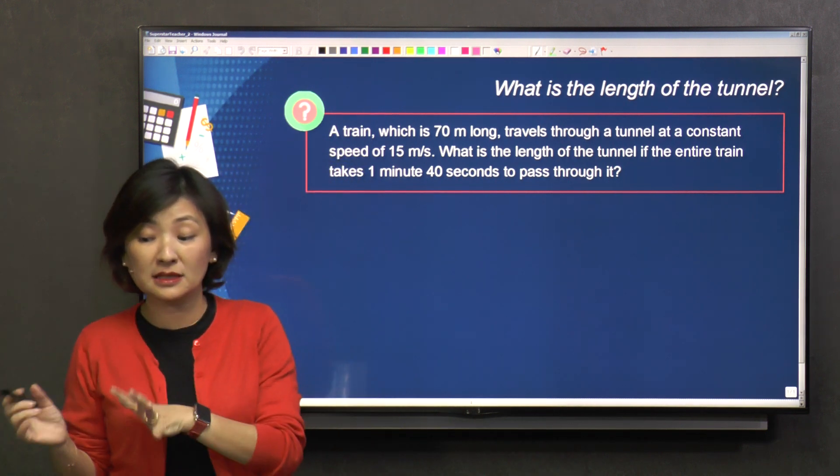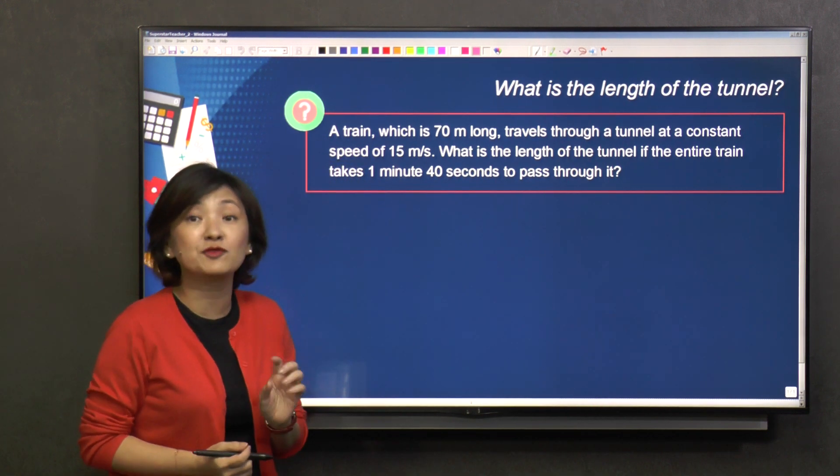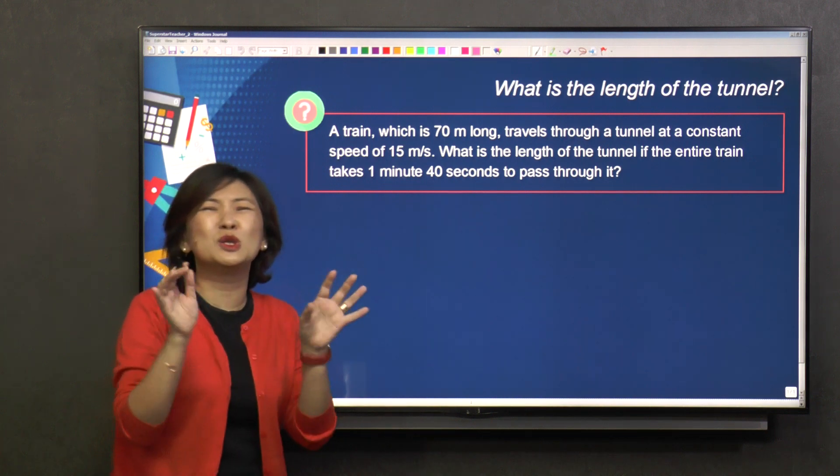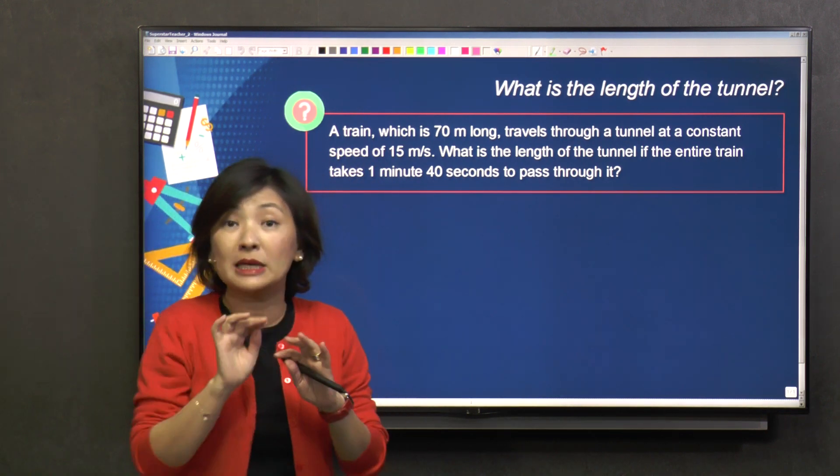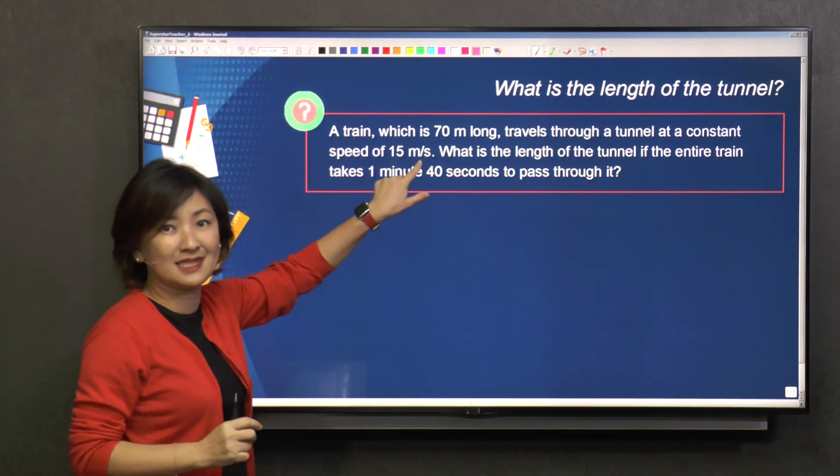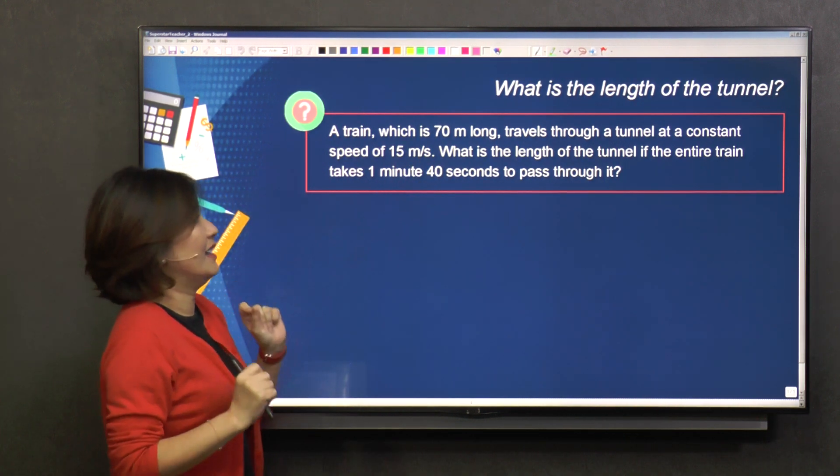It travels through a tunnel at a constant speed of 15 meters per second. Of course, we know that trains might slow down a little bit, be faster a little bit, but it's an assumption that the speed is 15 m/s, meter per second, right?